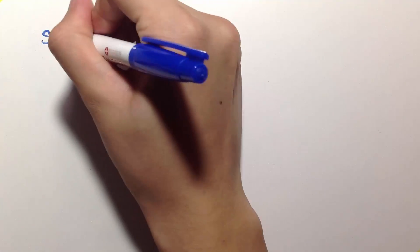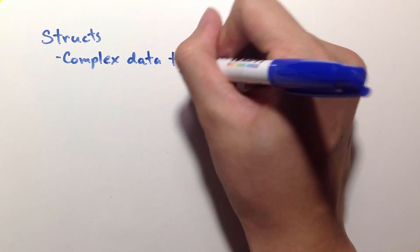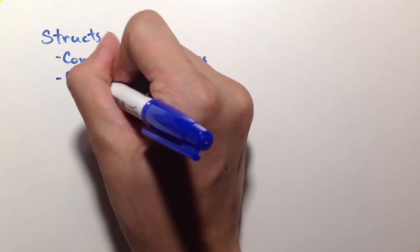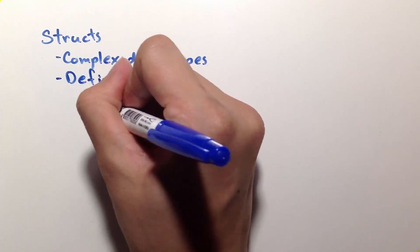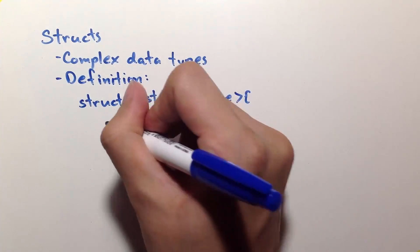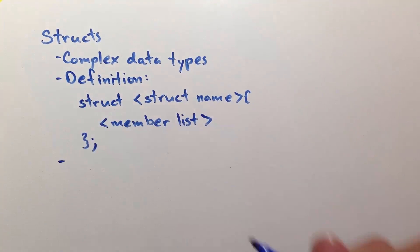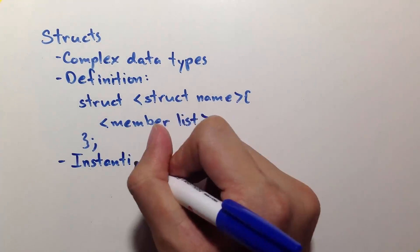Remember that structures are complex data types that can store multiple variables whether they're the same or different data types. The definition of a structure is as follows. Start with the struct followed by the structure name, open curly braces, followed by the comma separated member list ending with closing curly brace and the semicolon.